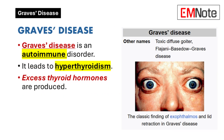Graves' disease is an autoimmune disorder that leads to hyperthyroidism. This condition occurs when the body produces excessive amounts of thyroid hormones, specifically triiodothyronine and thyroxine. The overproduction of these hormones results in various physiological changes.